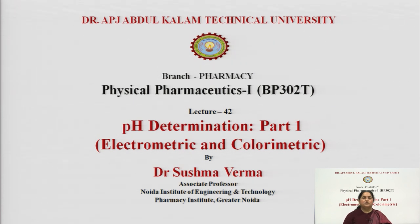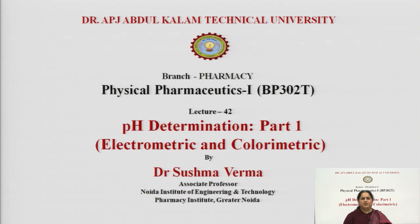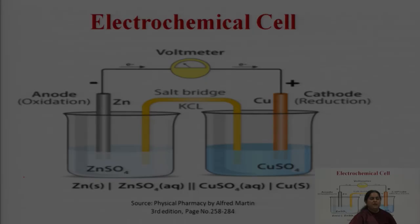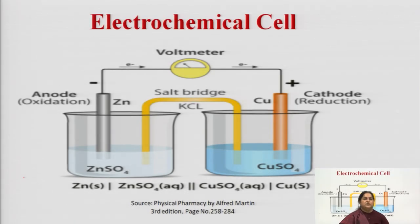We will be using two methods to determine pH: one is the electrometric method and another one is the colorimetric method. In this lecture we will be discussing the electrometric method of determination of pH, and the colorimetric method will be discussed in part two of the same lecture — my next lecture.